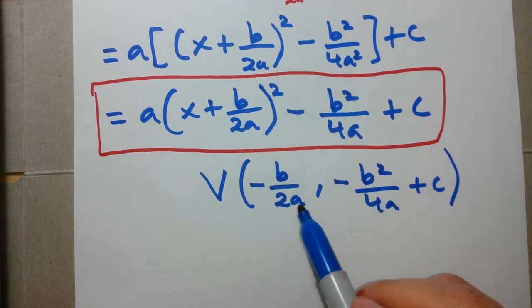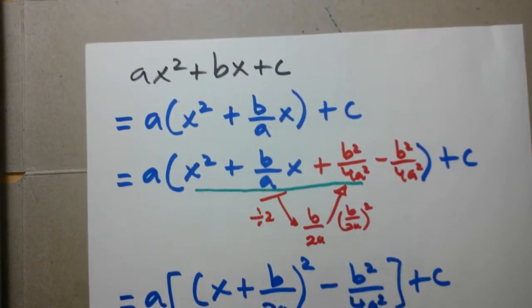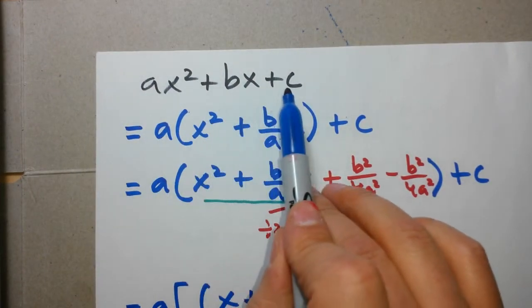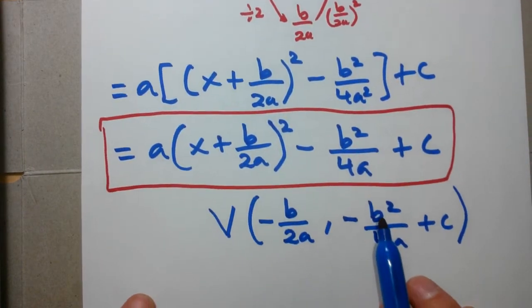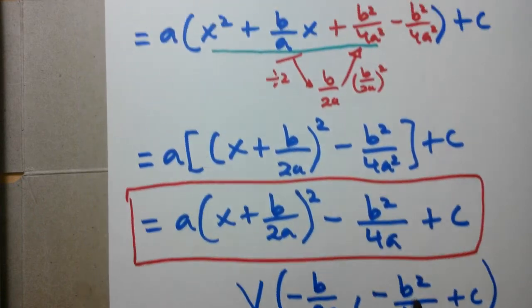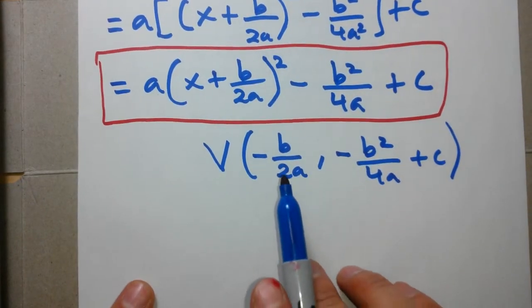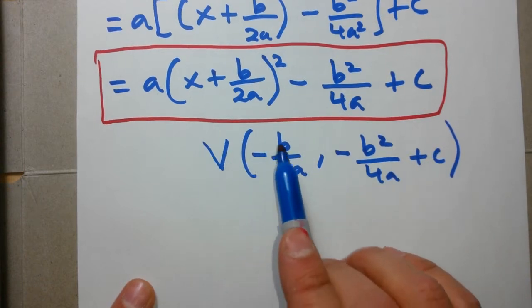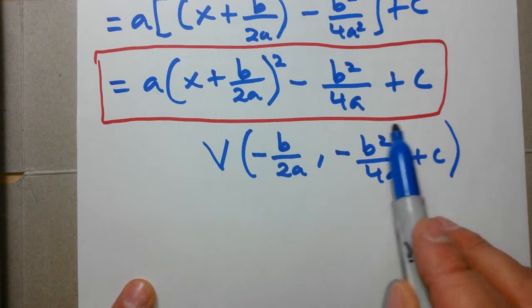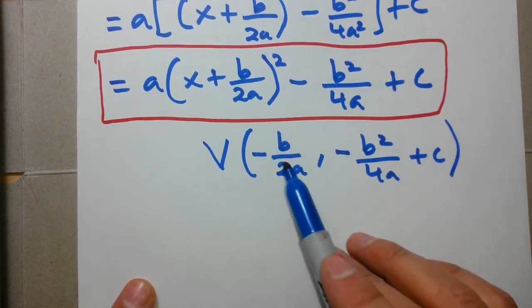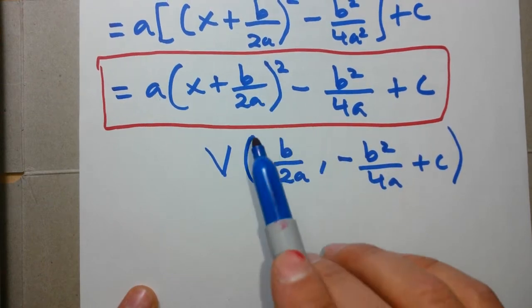So essentially, remember at the beginning we said that a, b, and c are constants, right? a, b, and c correspond to the constant terms of the quadratic equation in standard form. So in other words, if we're given an equation in standard form, if we know that this represents the x-coordinate of the vertex and this represents the y-coordinate of the vertex, then we can simply plug in those values and figure out what the vertex of this equation is.